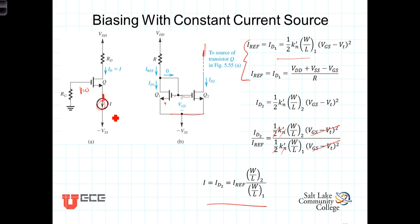This current mirror constant current source is used extensively in integrated circuits for biasing transistors. This is a very effective way of establishing a constant and stable bias condition.